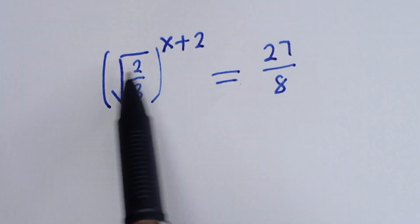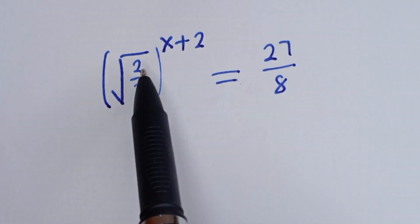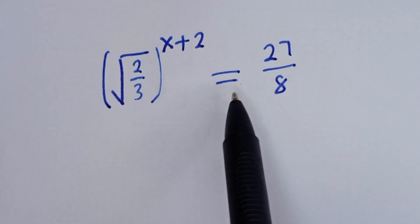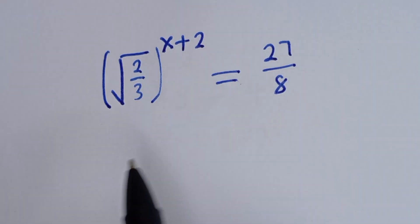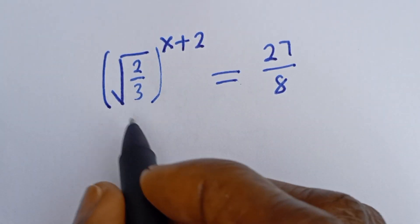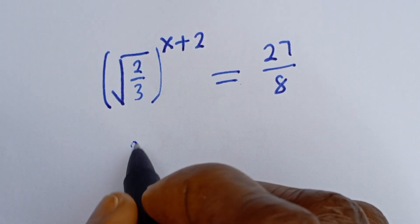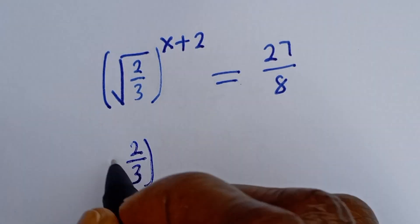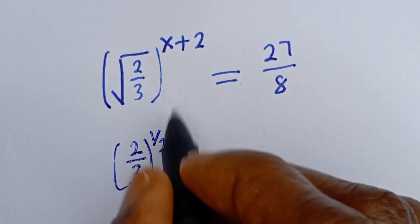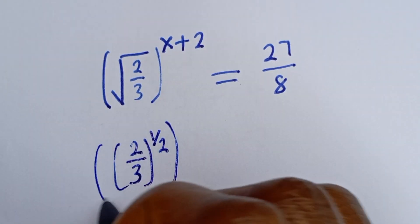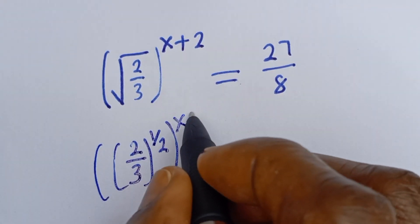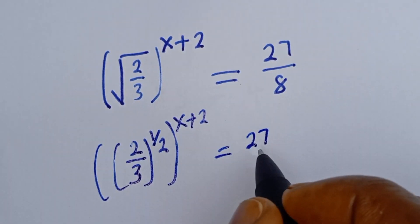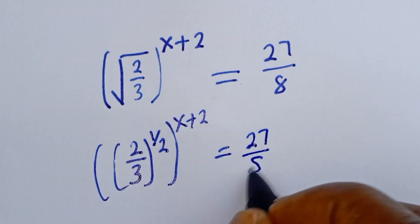Hello. How to solve for S in this equation: square root of 2 divided by 3, to the power of S plus 2, is equal to 27 divided by 8. Now here we have 2 divided by 3, and this square root can be written as to the power of 1 over 2, then to the power of S plus 2, is equal to 27 over 8.